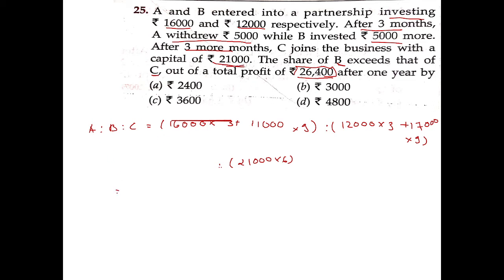This gives ratios of 147 : 189 : 126. Dividing by 21, this simplifies to 7 : 9 : 6. The total profit is $26,400.